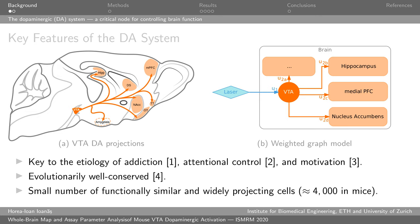The dopaminergic system is particularly well suited for translational research because it is evolutionarily well conserved. Additionally, it is interesting from a systems neuroscience point of view simply because it consists of a small number of functionally similar, co-localized, and widely projecting cells. In these figures you can see a map of the many regions which the VTA — one of the two lateralized structures in which dopaminergic cell bodies reside — projects to, and in the right-hand figure you can see a graph representation of the brain showing how the dopaminergic system could be modeled as a simple one-step relay graph representation of the neural network.